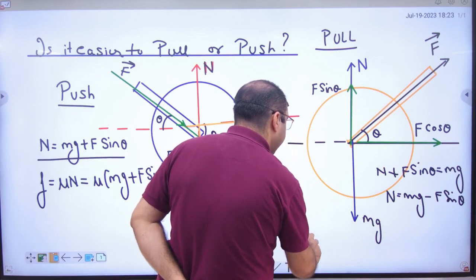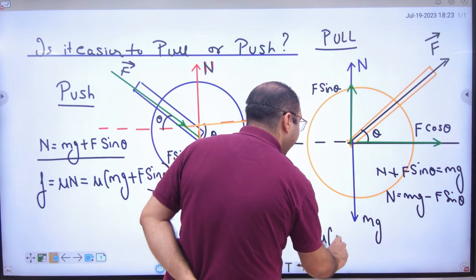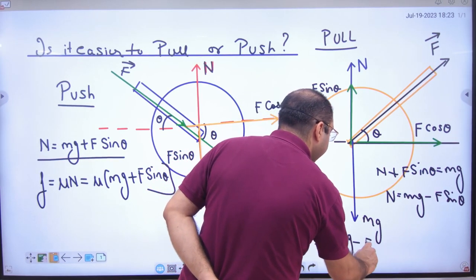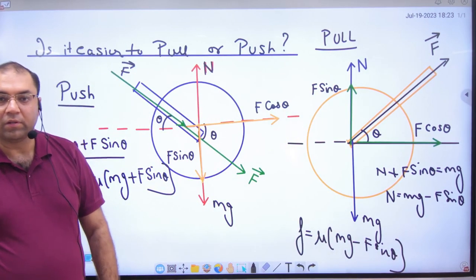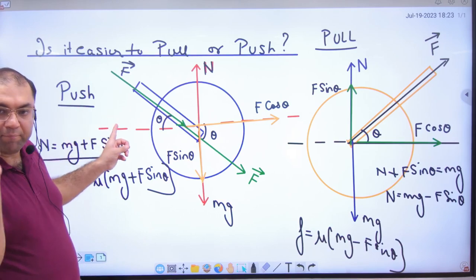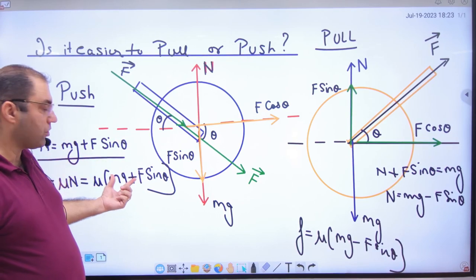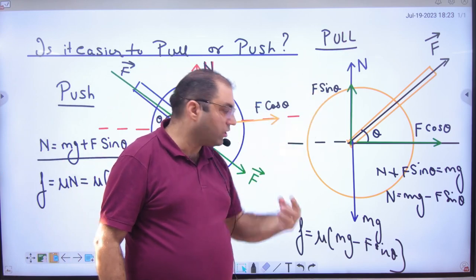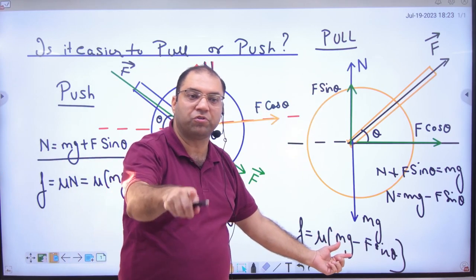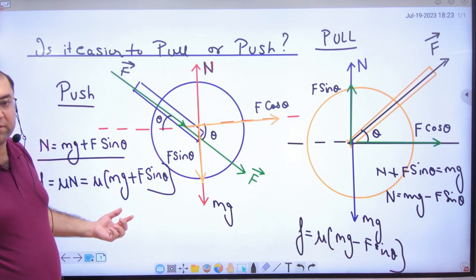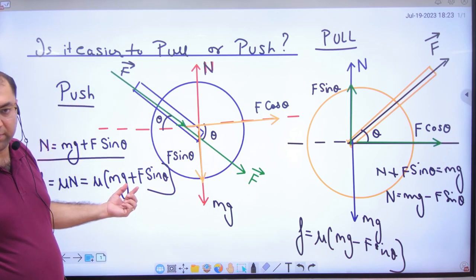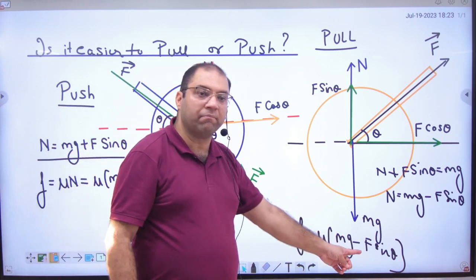And force of friction, then mu times normal reaction, mg minus f sin theta. Like when you did push, this force of friction. When you did pull, this force of friction. Plus in push and pull minus.